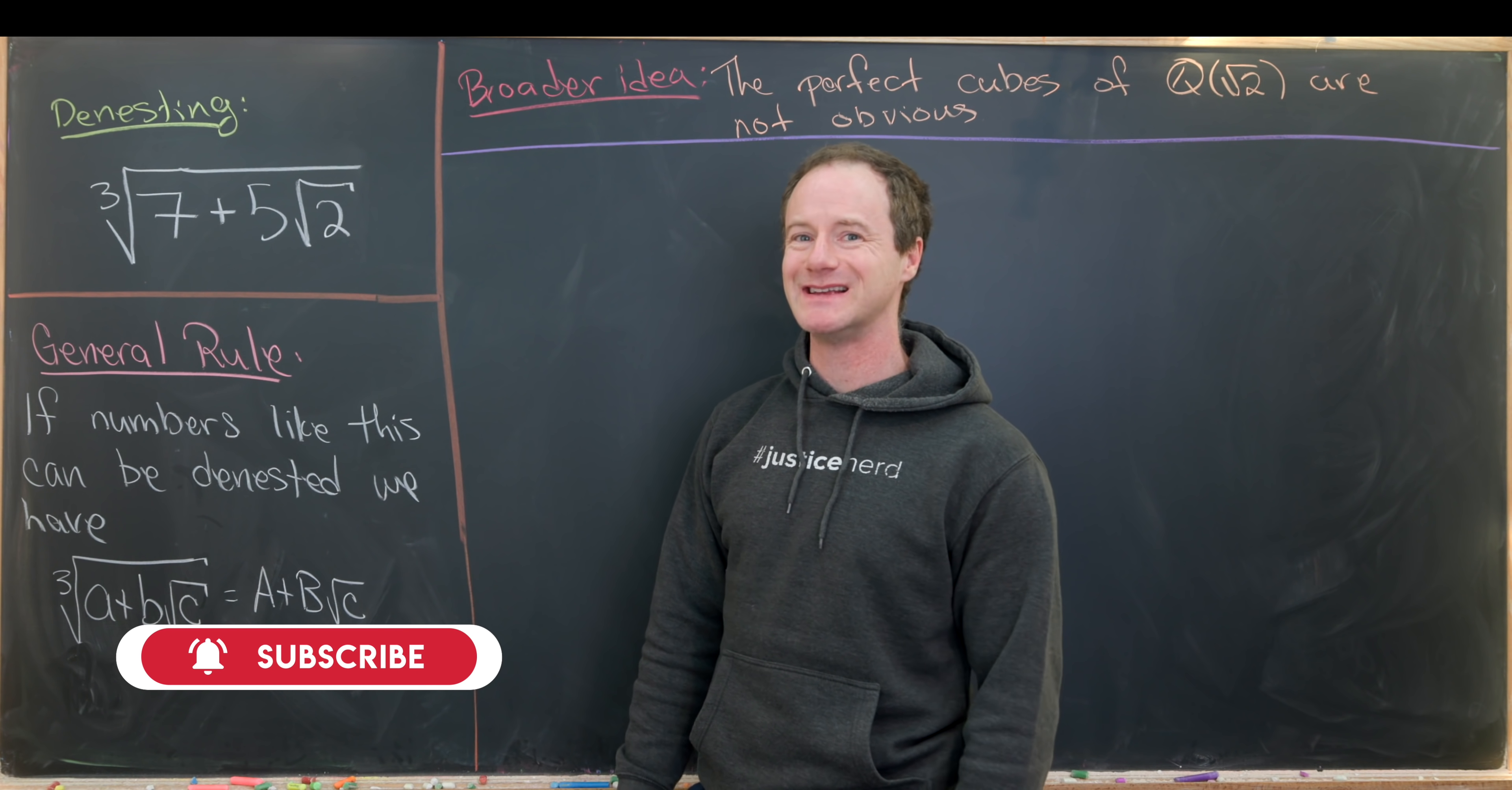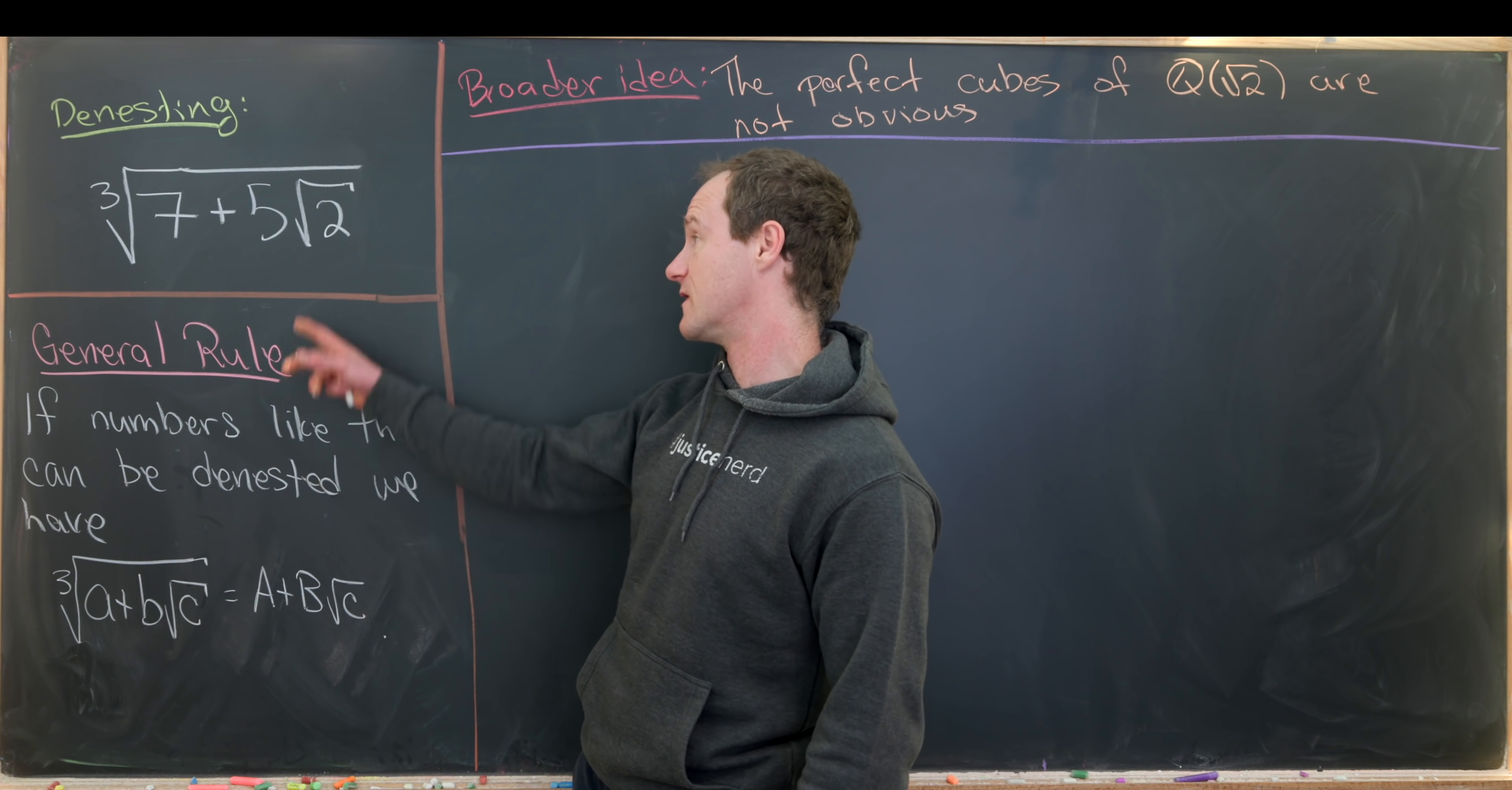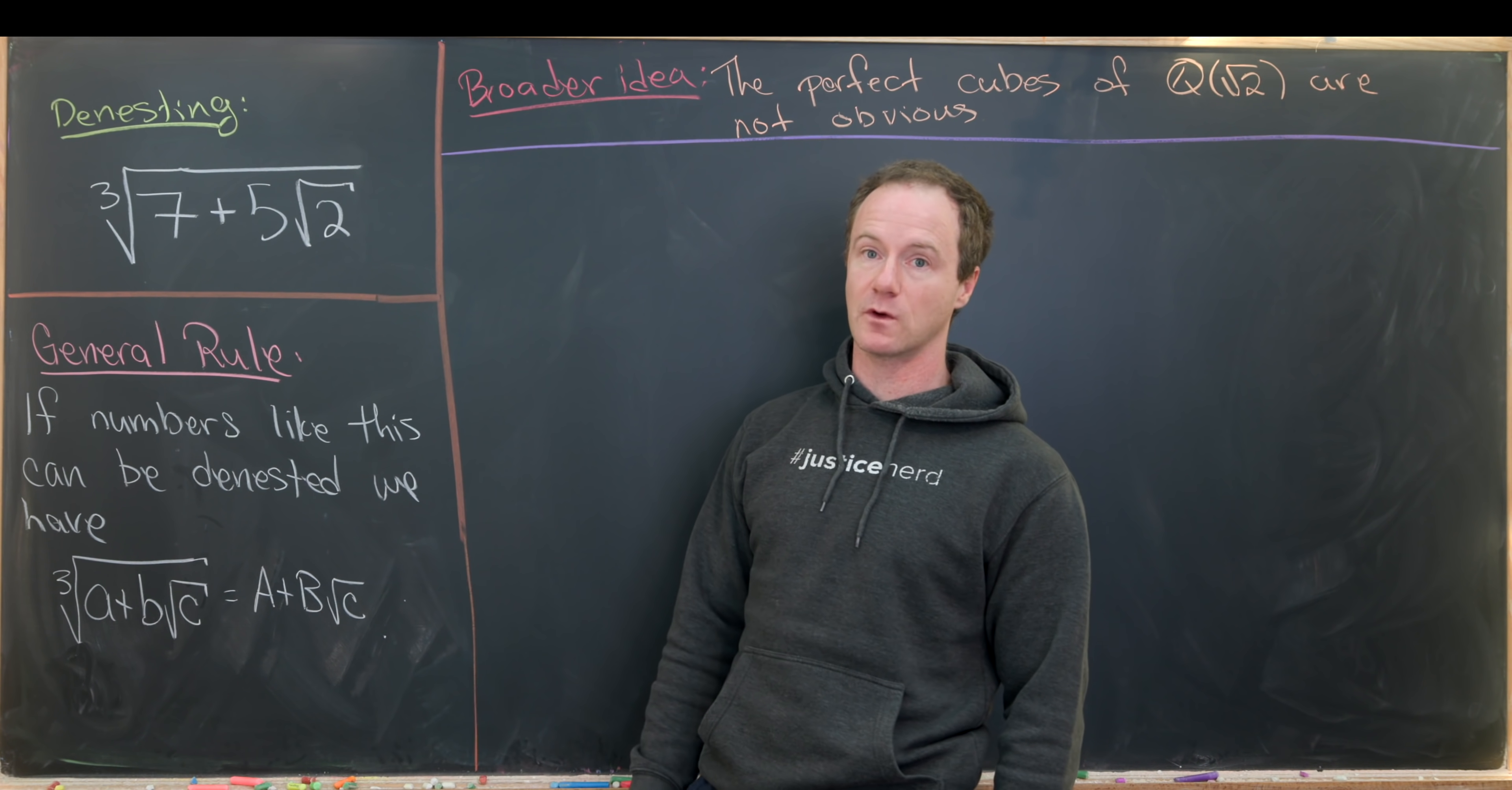And what do I mean by denesting this? Well these kind of denesting procedures follow the following general rule. If you can write them with instead of nested radicals but with unnested radicals then they should have the following kind of simplified form.